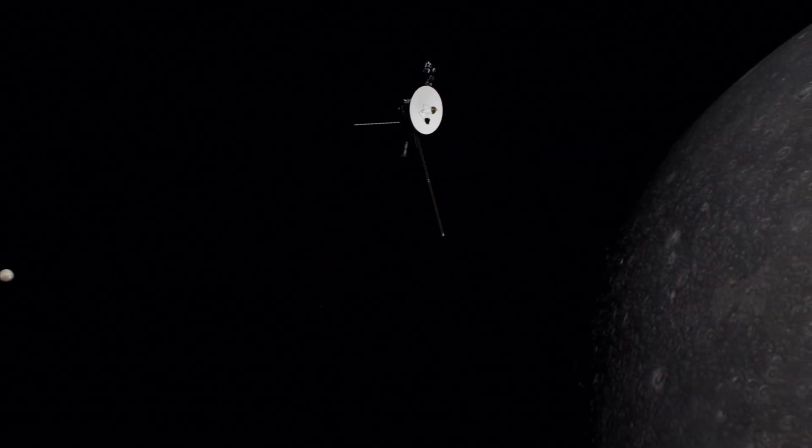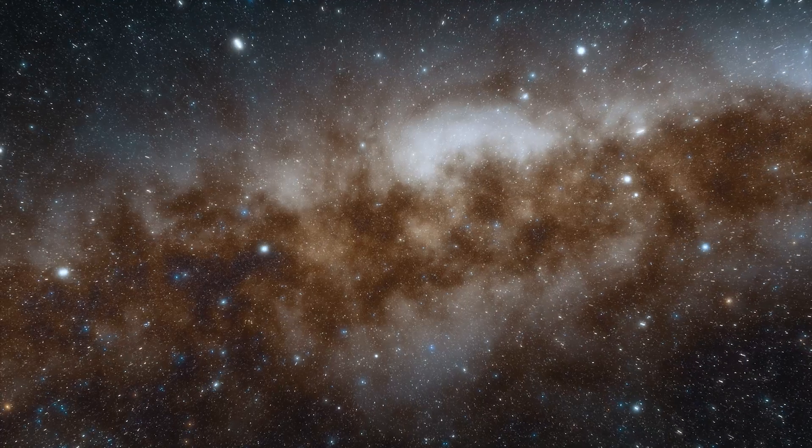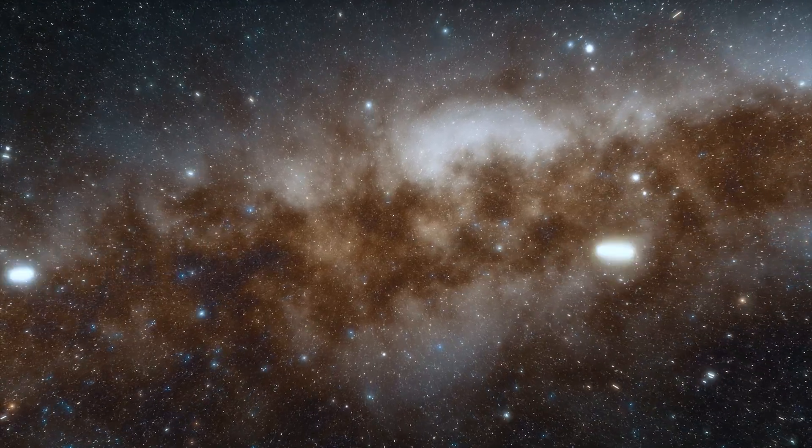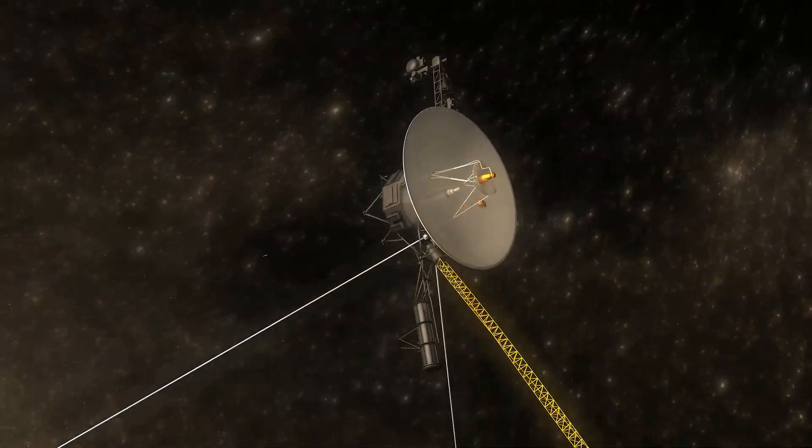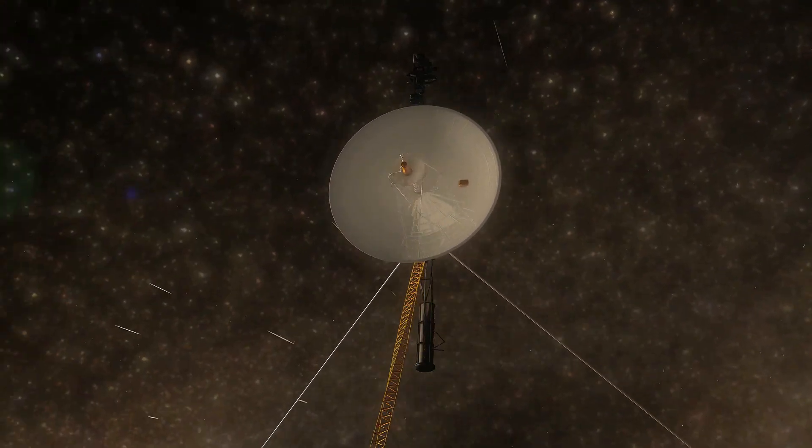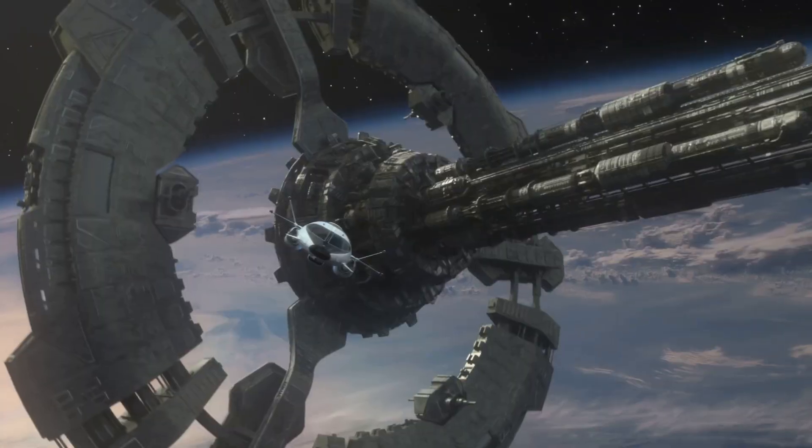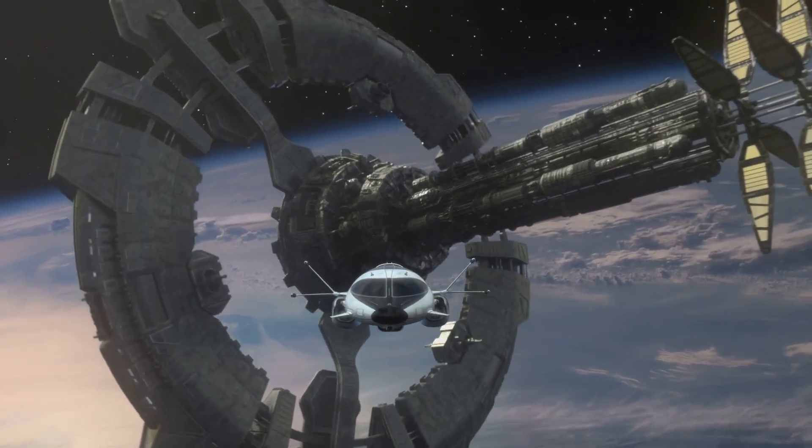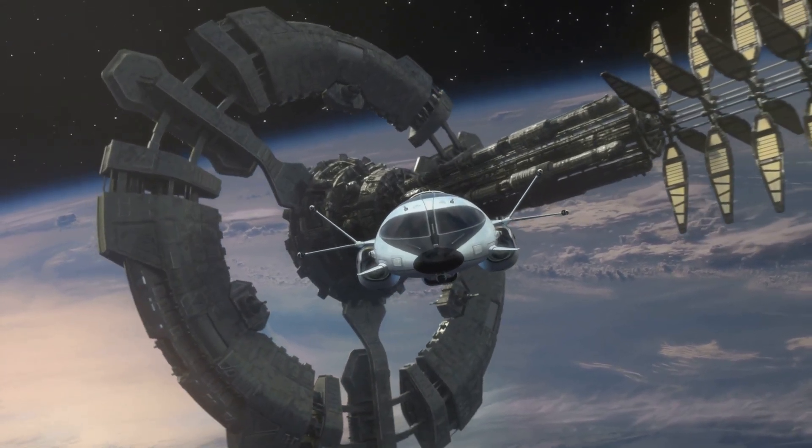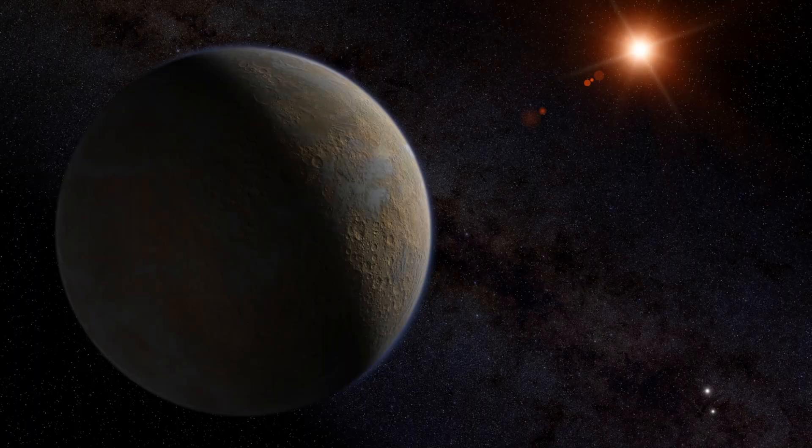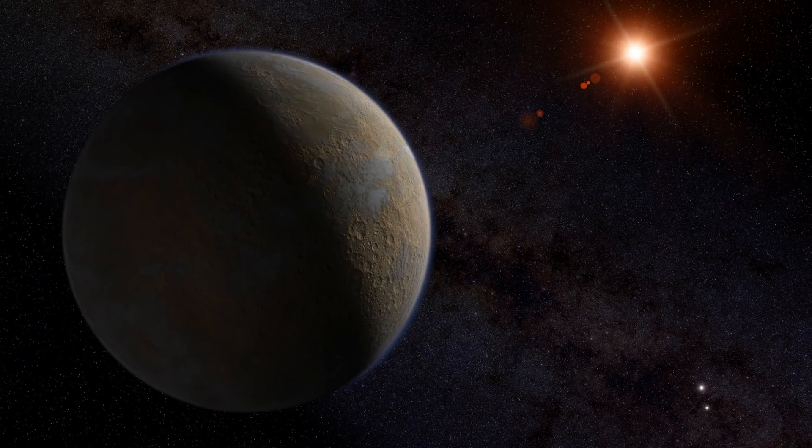Right now, our fastest spacecraft, Voyager 1, has been flying for over 45 years, and it's not even 0.06% of the way to Alpha Centauri. At that speed, a trip to Alpha Centauri would take over 75,000 years. If we want to colonize another star system, we'll need to revolutionize space travel, maybe even rethink physics itself. But if we can get there, it might just be humanity's second home.